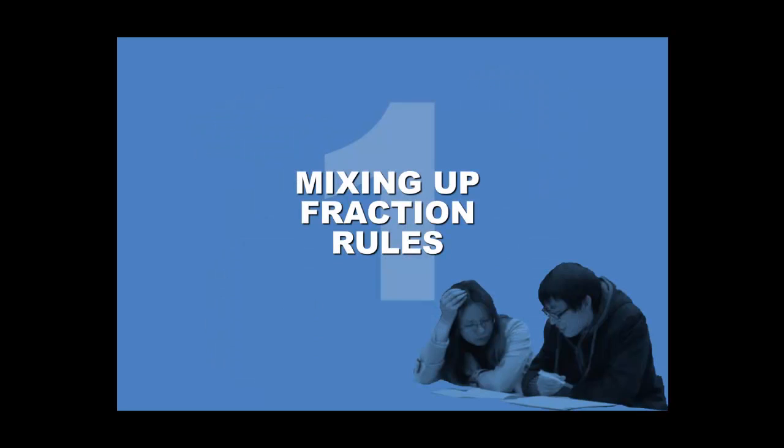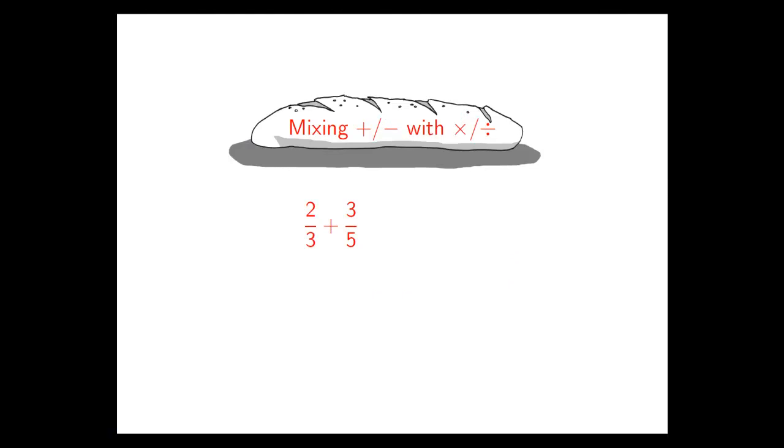Let's start with what happens if we mix up our rules for manipulating fractions. Here's a simple numerical activity, two thirds plus three fifths. If you're unsure about the relationship between addition and multiplication in fractions, you might be tempted to add the top lines together and divide by the addition of the bottom lines, which would produce five eighths. This isn't true. This is actually the kind of thing you do when you're multiplying or dividing fractions.